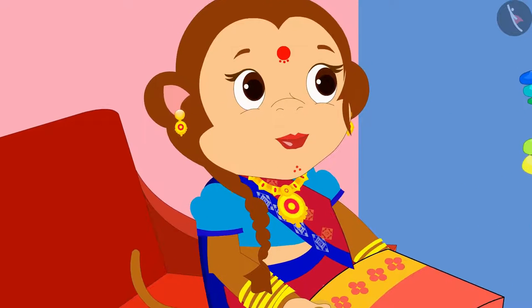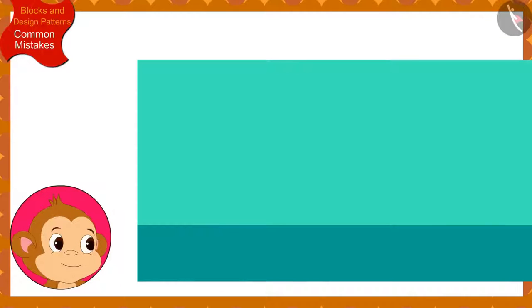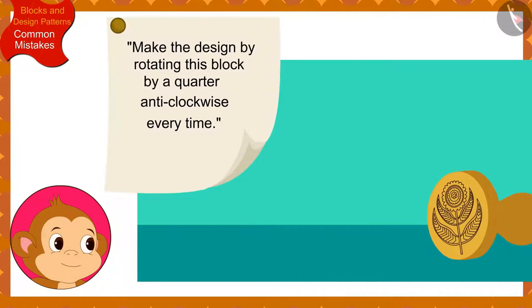Banno told Babban, Babban has to make the design using this block according to this rule on the first saree. Make the design by rotating this block by a quarter anti-clockwise every time.